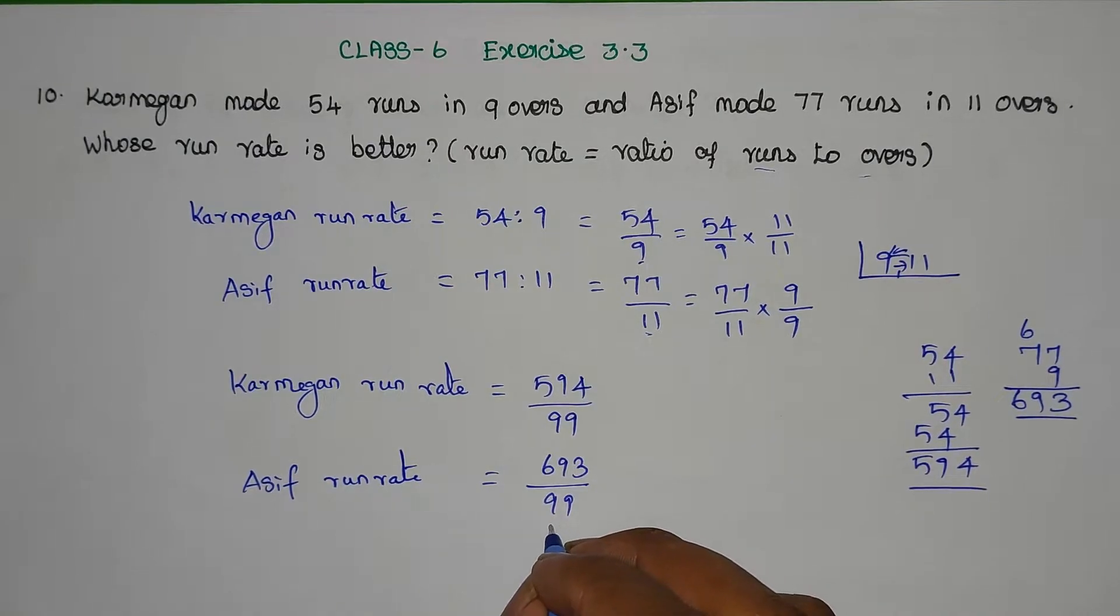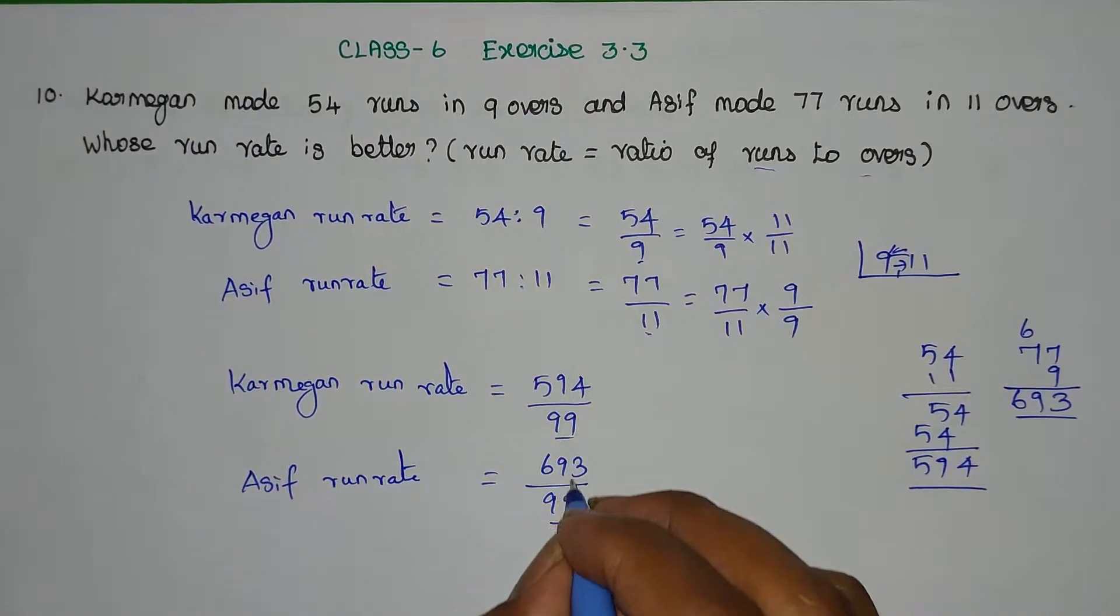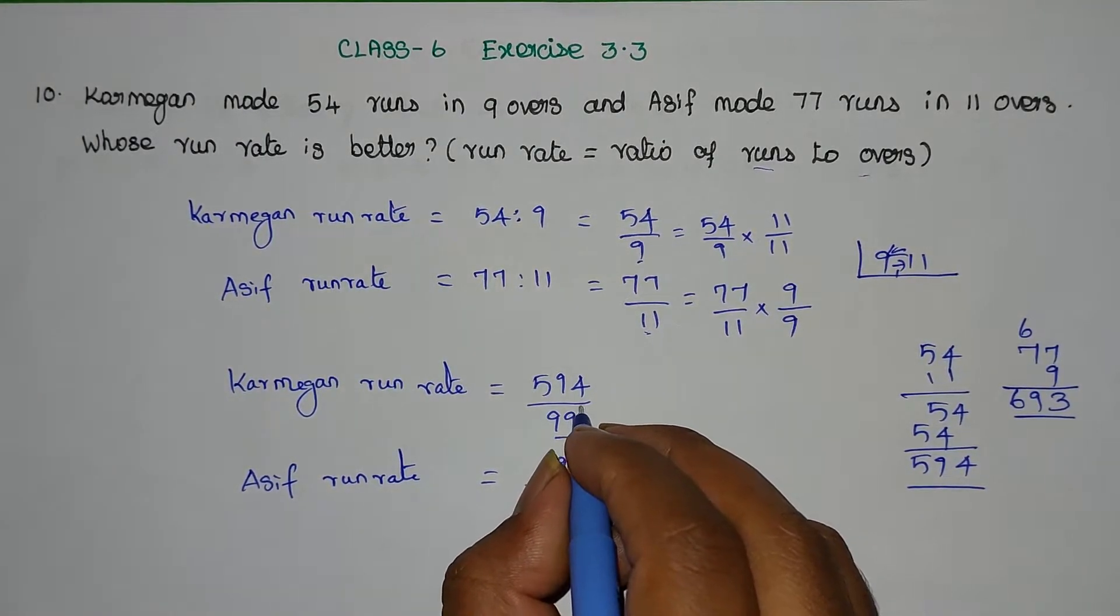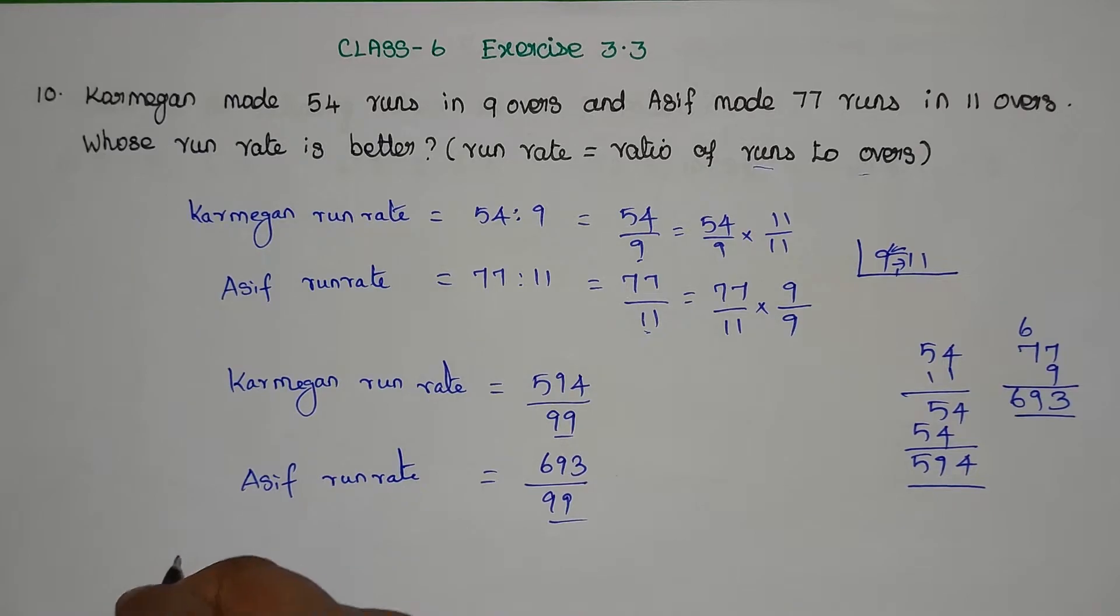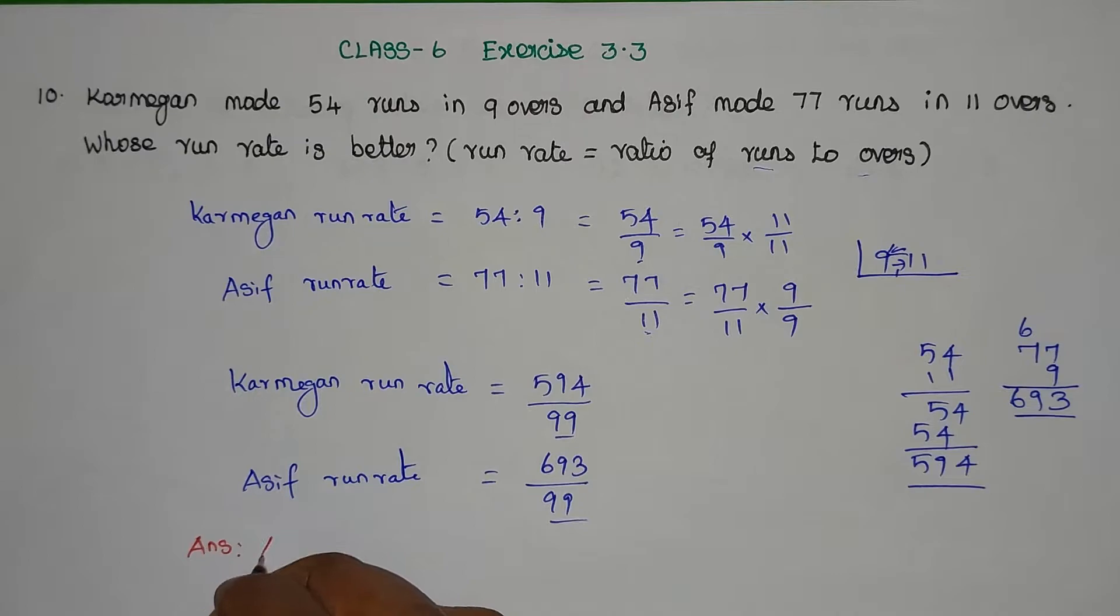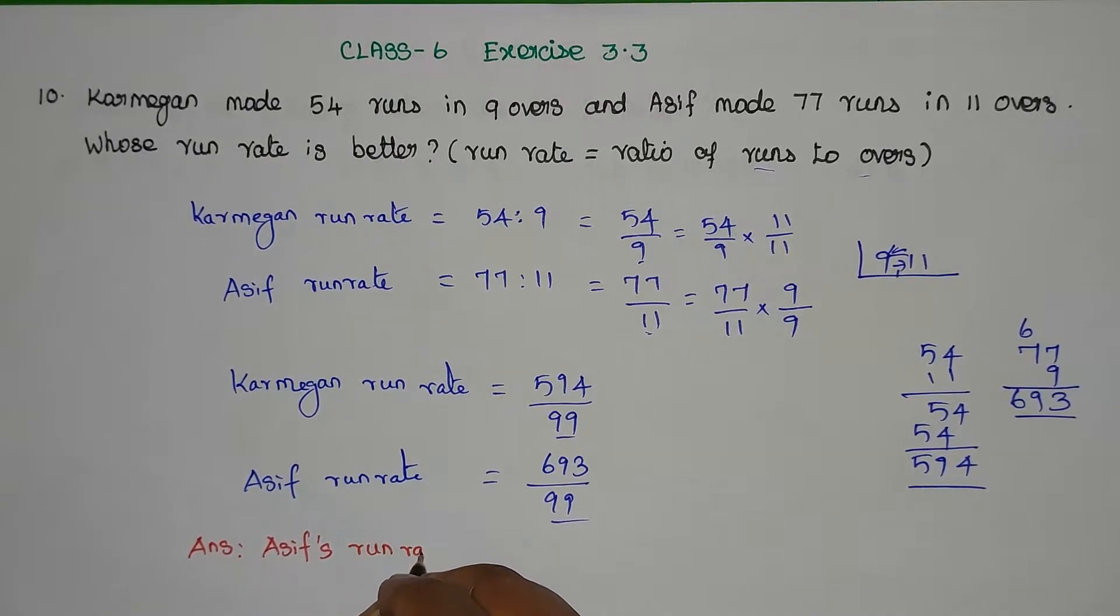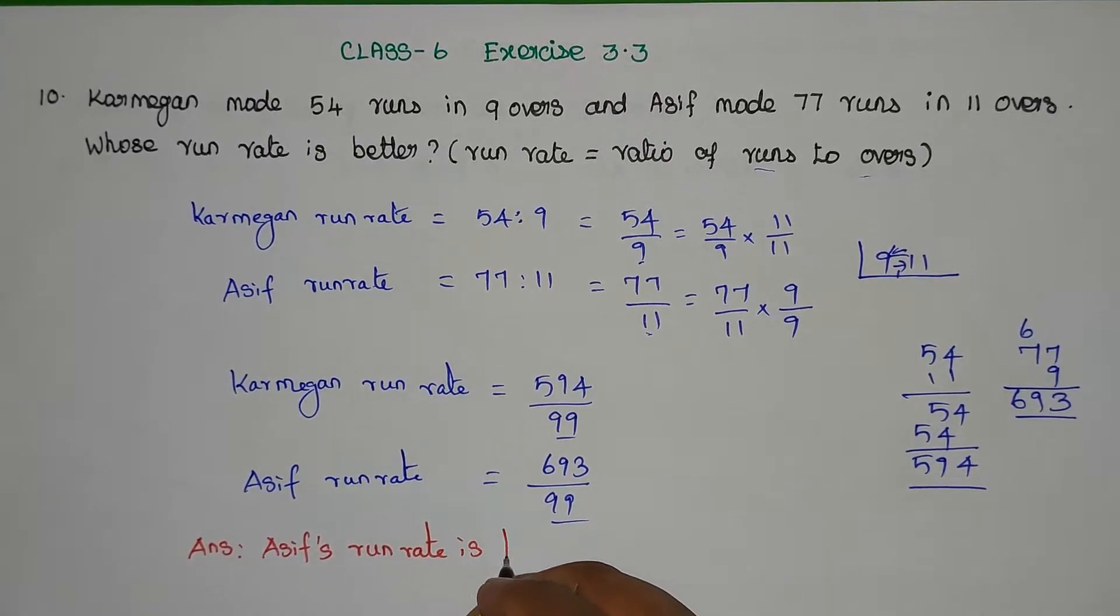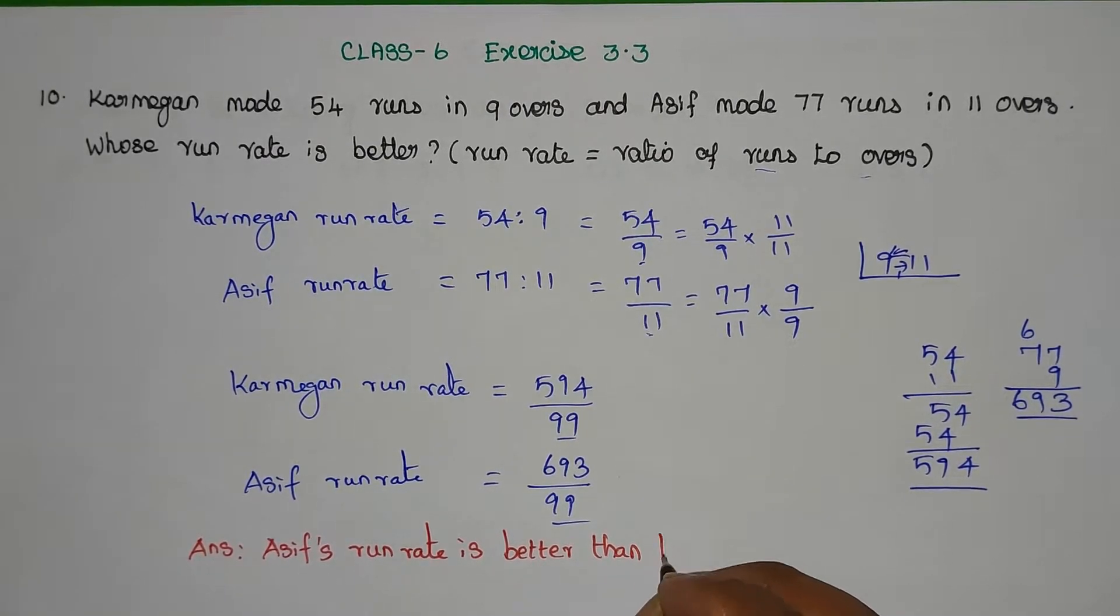Now compare the numerators. Both denominators are 99. Asif is 693 and Carmagan is 594. Asif's run rate is better. Answer: Asif's run rate is better than Carmagan's run rate.